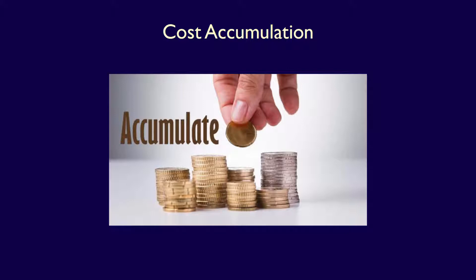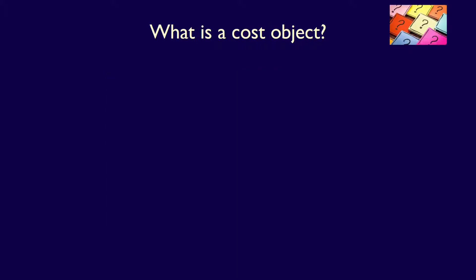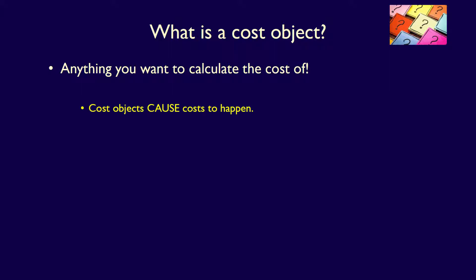Accumulating costs means that we gather together, measure, and record the costs. But what is the thing we are accumulating costs for? That's called a cost object. A cost object is anything an organization wants to calculate the cost of. Cost objects must cause costs to happen. This means that if the cost object did not exist, the cost would cease to exist also.